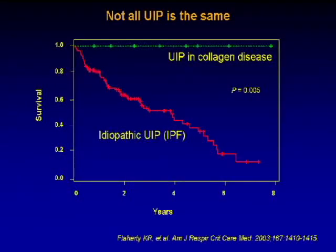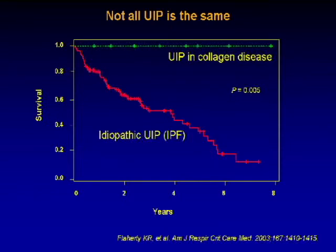This graph shows survival — or non-survival — of patients who have idiopathic UIP or IPF. The survival curve drops off very steeply over years. However, not all UIP is the same: the survival curve of UIP in collagen disease is very different — no one is dying from that abnormality. So even though the histology is the same, the disease does not result in the same survival.